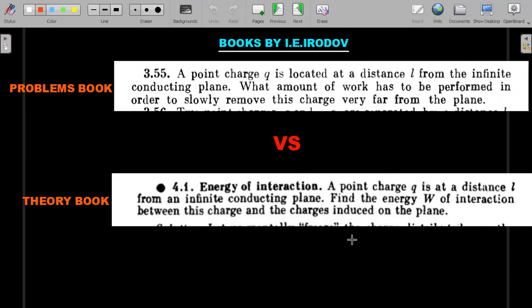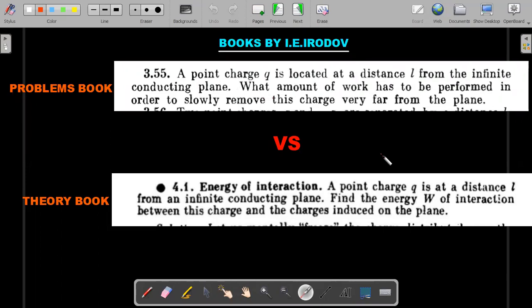The first one is the problem book question 3.55. If you want to try these questions on your own, please pause the video here and give it good enough time. Irodov questions are always beautiful ones. Problem 3.55: A point charge q is located at a distance L from an infinite conducting plane. What amount of work has to be performed in order to slowly move this charge very far from the infinite conducting plane?